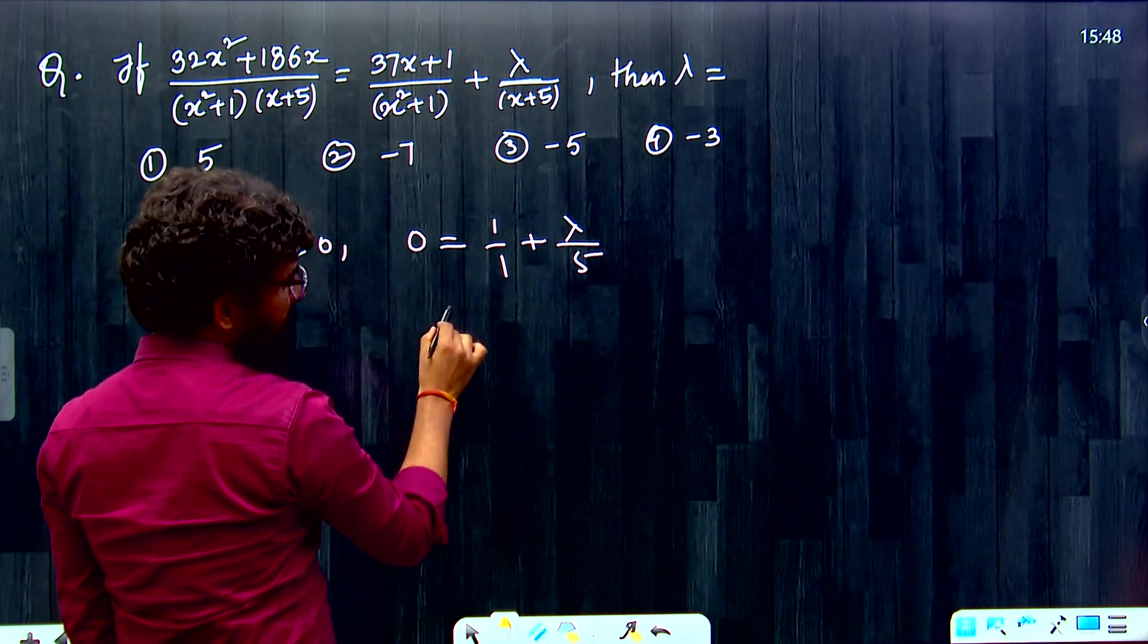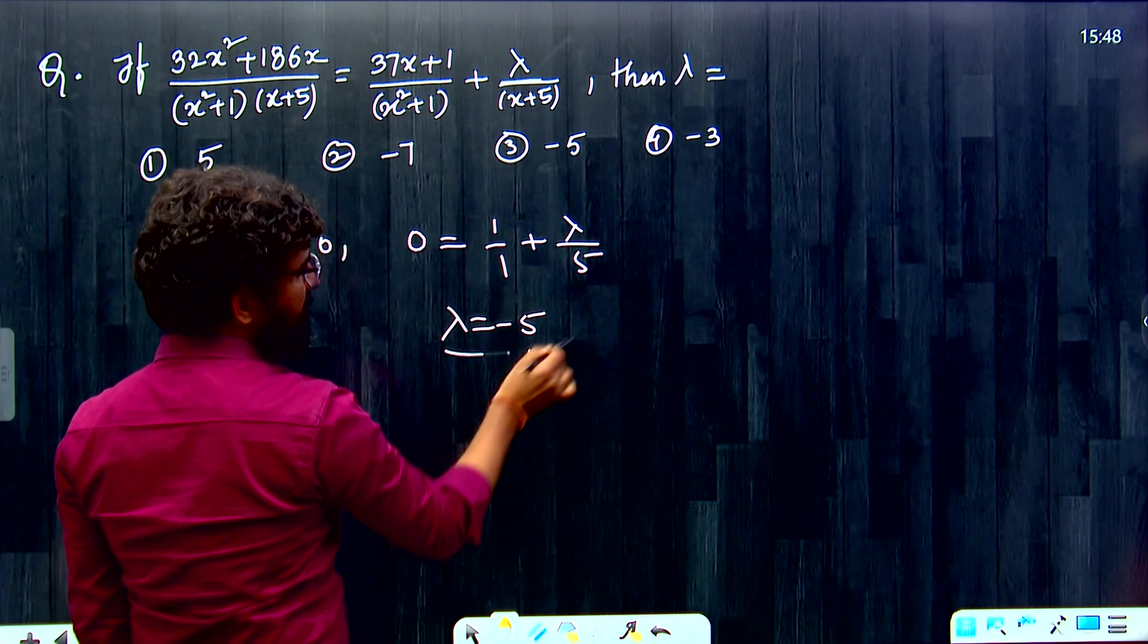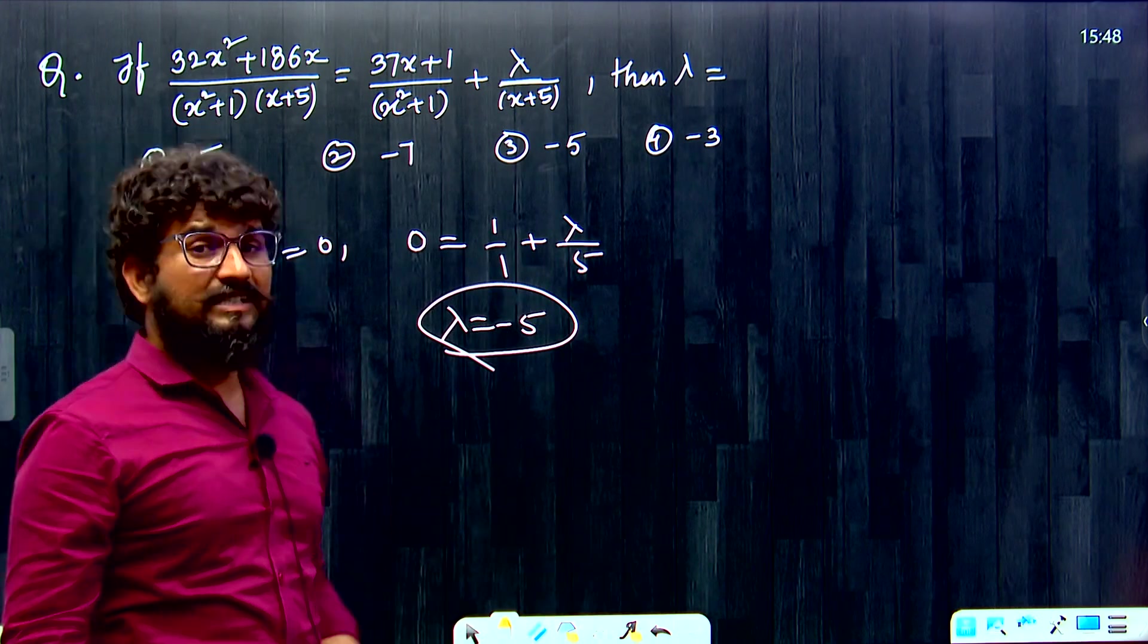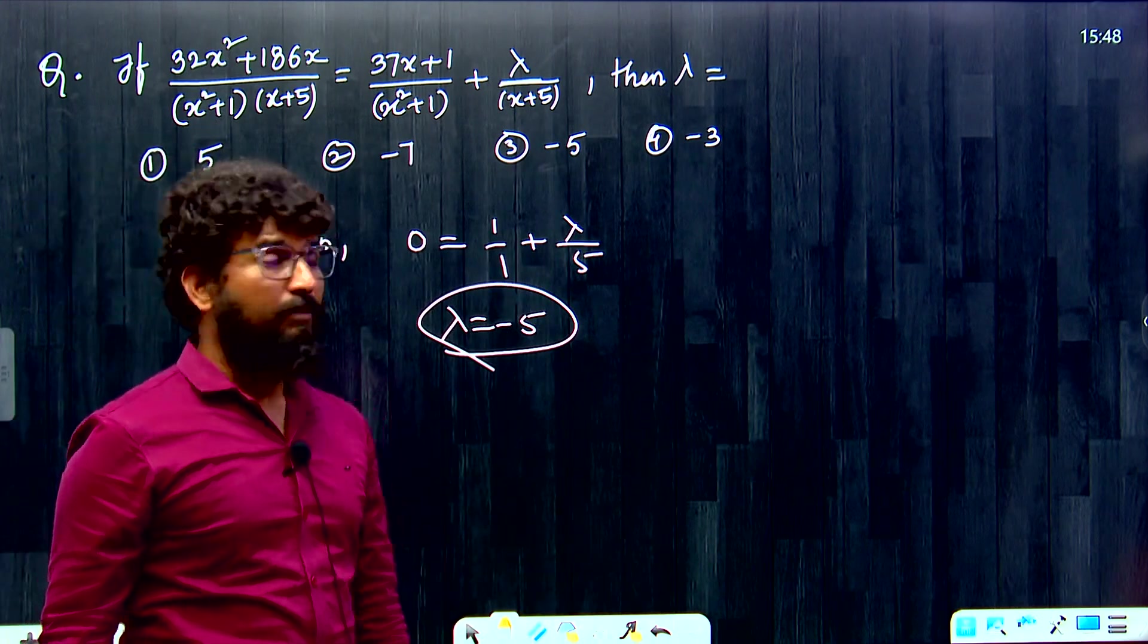1 equal to 1, 5 equal to 1, 6. Lambda is nothing but minus 5. Very simple questions which are asked in competitive field of examinations. Please observe.